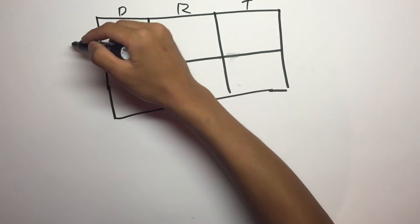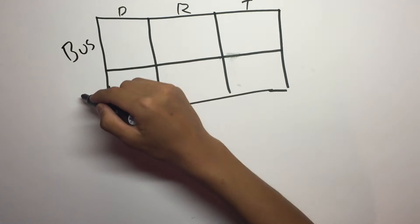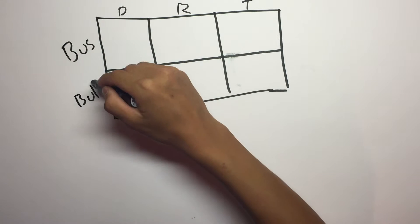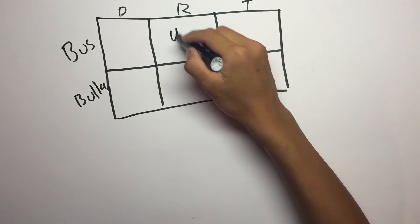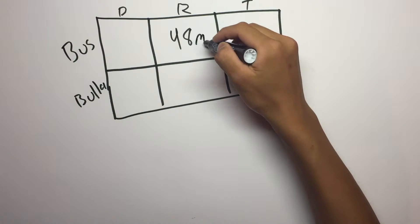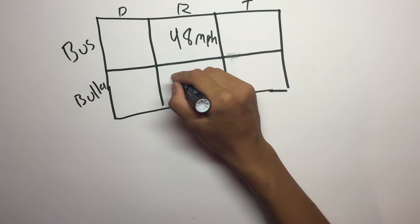So we're going to do bus on the top again and Bula on the bottom. The rate for the bus is 48 miles per hour and Bula has a rate of 54 miles per hour.